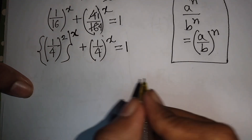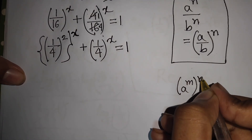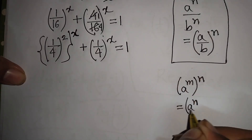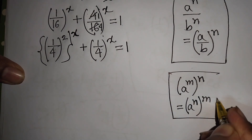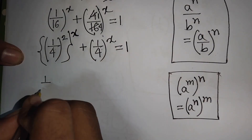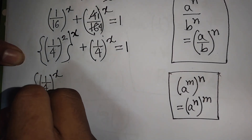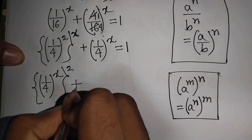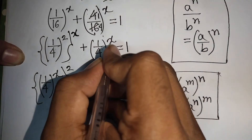Now here we can apply the exponential rule: (a^n)^m equals a^(n·m). According to this rule, I can write (1/4)^x to the power of 2, plus (1/4)^x, which expands our equation further.